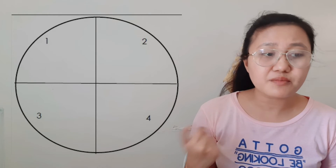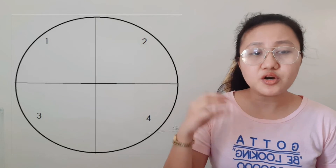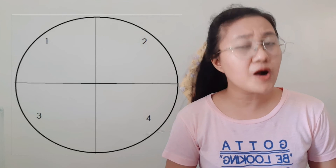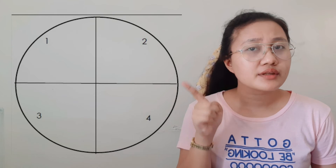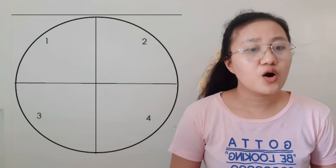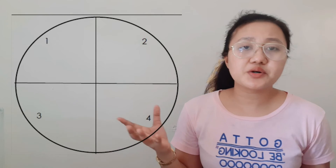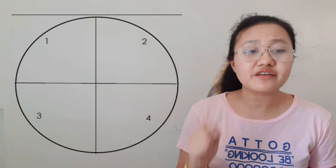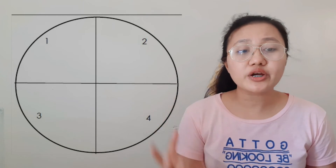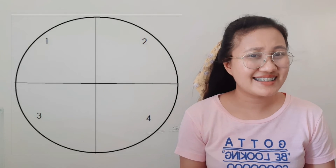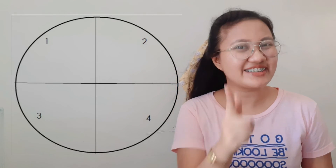Let us proceed now with the next activity. Meron tayo ditong bilog na hinating natin sa apat — merong four quarters. You're going to identify and describe the four seasons: summer, winter, fall, and spring. Ang gagawin nyo ay i-describe nyo lang yun — you're going to write one season for every quarter of the circle. In which quarter of the circle can you find the Philippines?